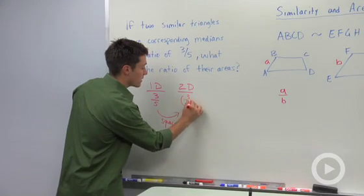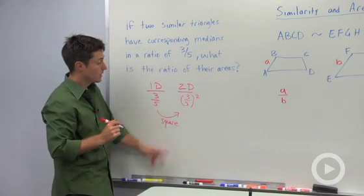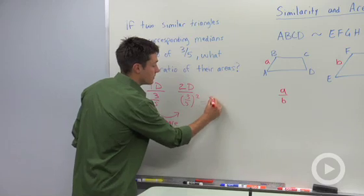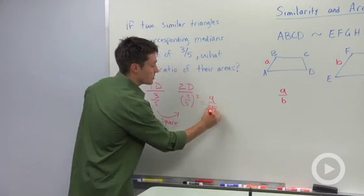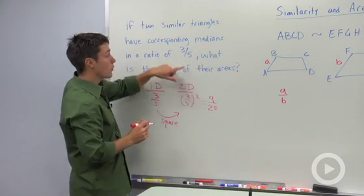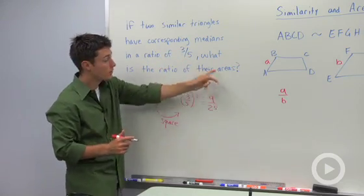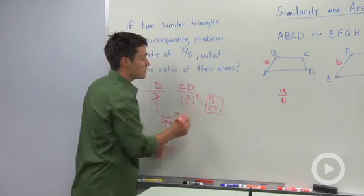So we're going to take three-fifths and square it. So three squared is nine, five squared is twenty-five. So notice that the one-dimensional ratio is three to five, and the ratio of their areas will be nine to twenty-five.